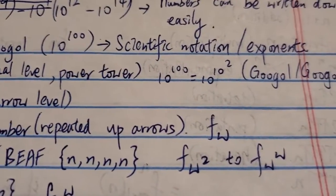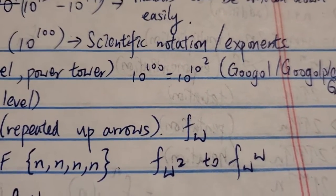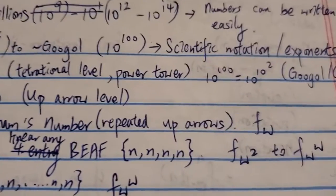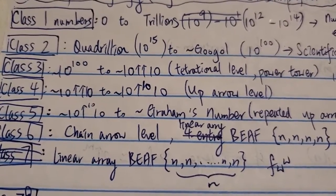Basically, this one is f of omega. So this is like the fast-growing hierarchy. This is around the growth rate in terms of this kind of functions that generate these numbers.